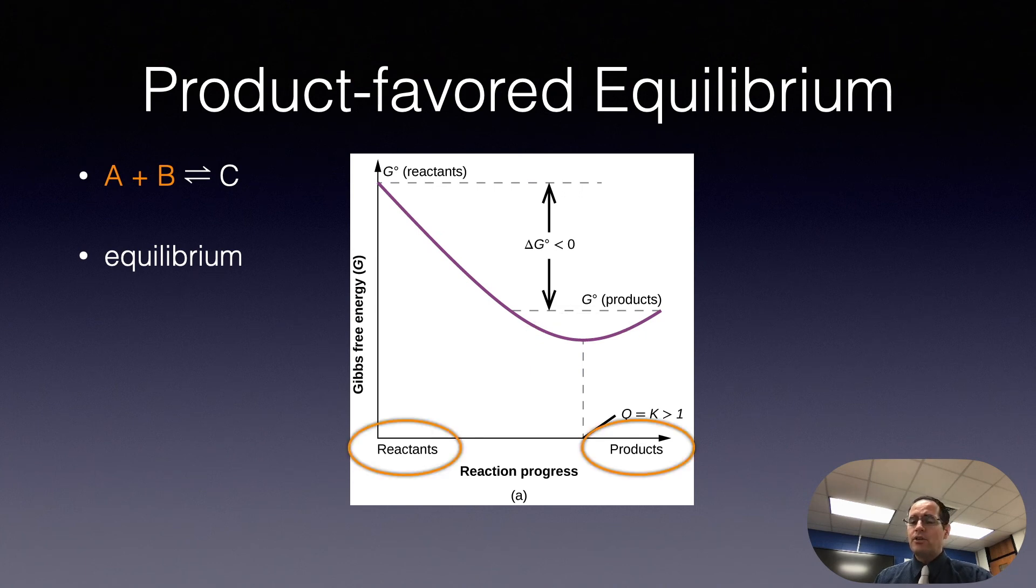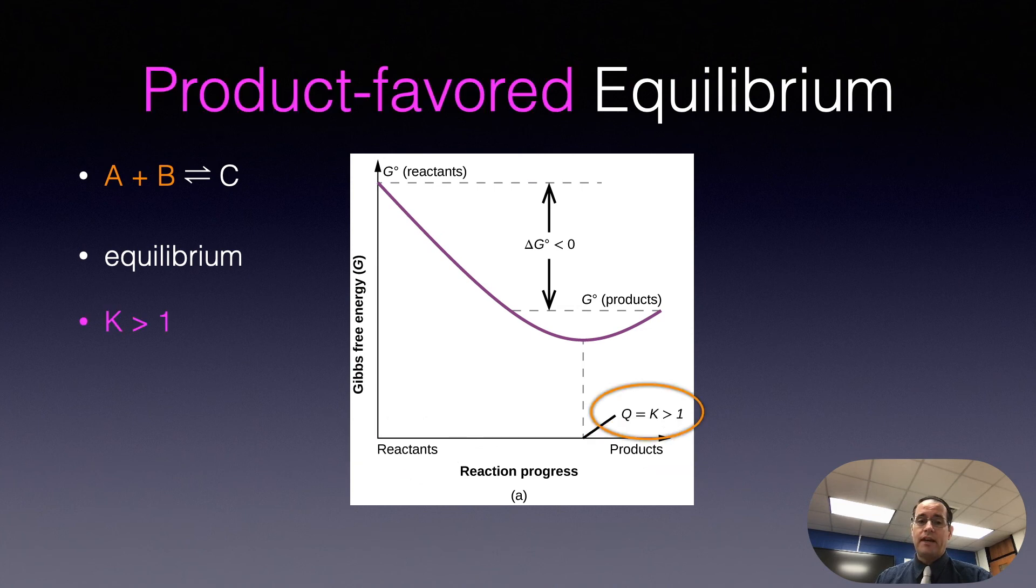At equilibrium, we don't have all products. That's the important thing. We have a product mixture. We have maybe 75% products and maybe 25% reactants. Now since this reaction is product favored, since it's product favored, in other words you have more products than reactants,